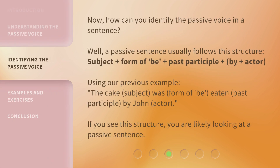Now, how can you identify the passive voice in a sentence? Well, a passive sentence usually follows this structure: Subject + form of 'be' + past participle + 'by' + actor. Using our previous example: 'The cake' (subject) + 'was' (form of 'be') + 'eaten' (past participle) + 'by John' (actor). If you see this structure, you are likely looking at a passive sentence.